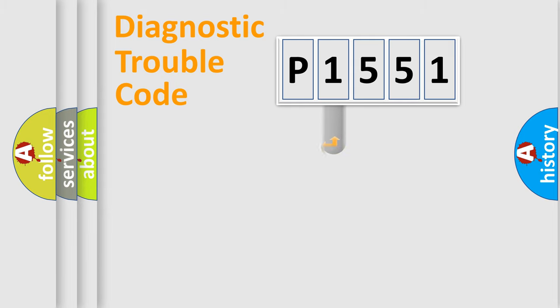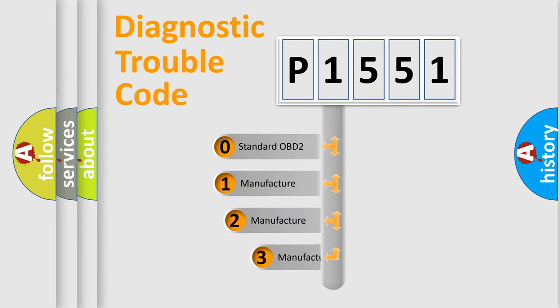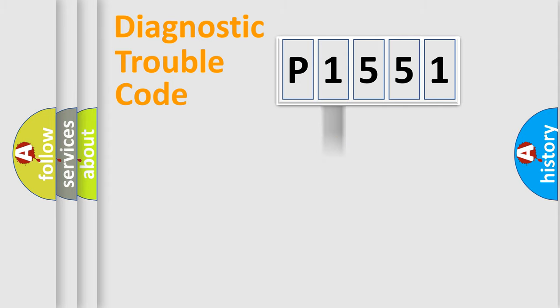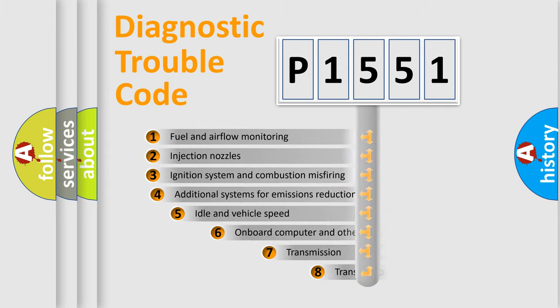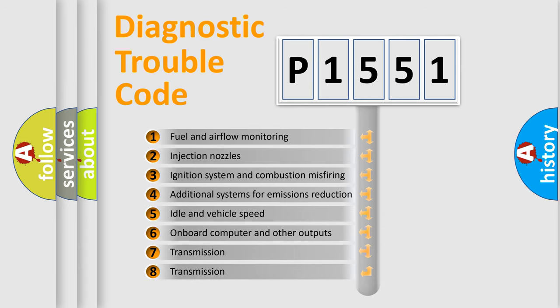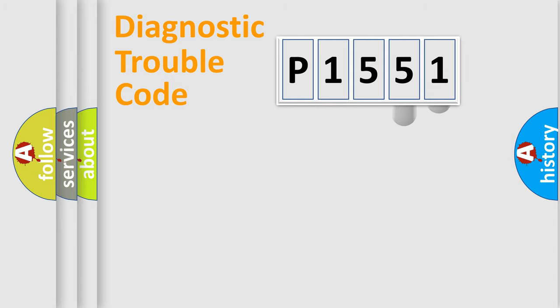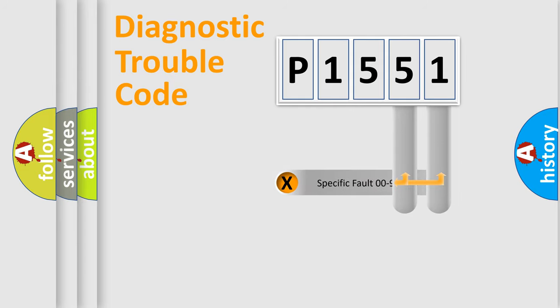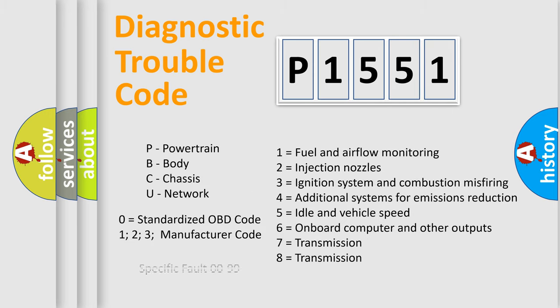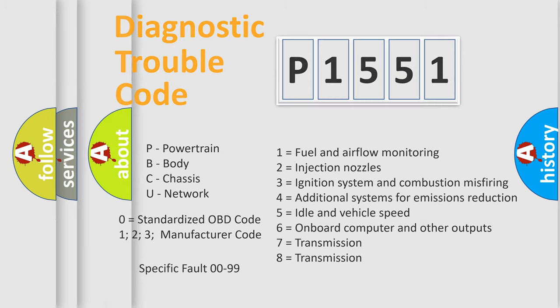This distribution is defined in the first character of the code. If the second character is expressed as zero, it is a standardized error. In the case of numbers 1, 2, or 3, it is a more specific expression of the car-specific error. The third character specifies a subset of errors. This distribution is valid only for the standardized DTC code. Only the last two characters define the specific fault of the group, and such a division is valid only if the second character code is expressed by the number zero.